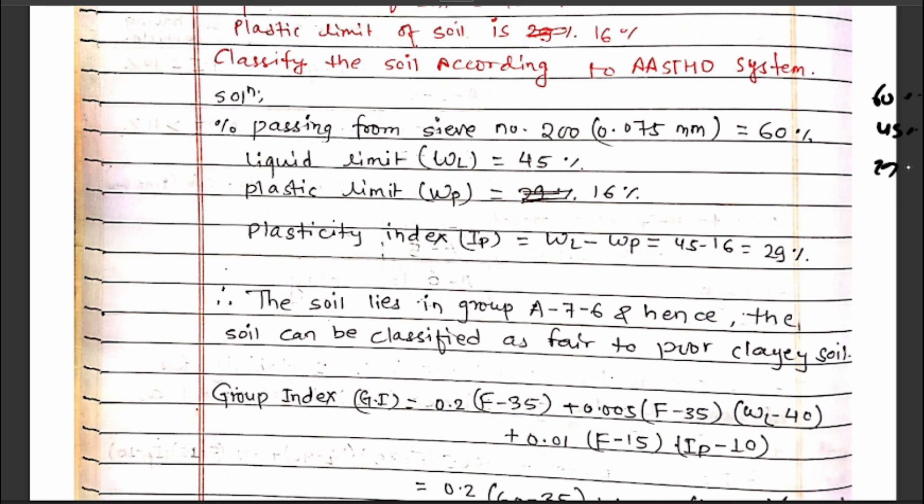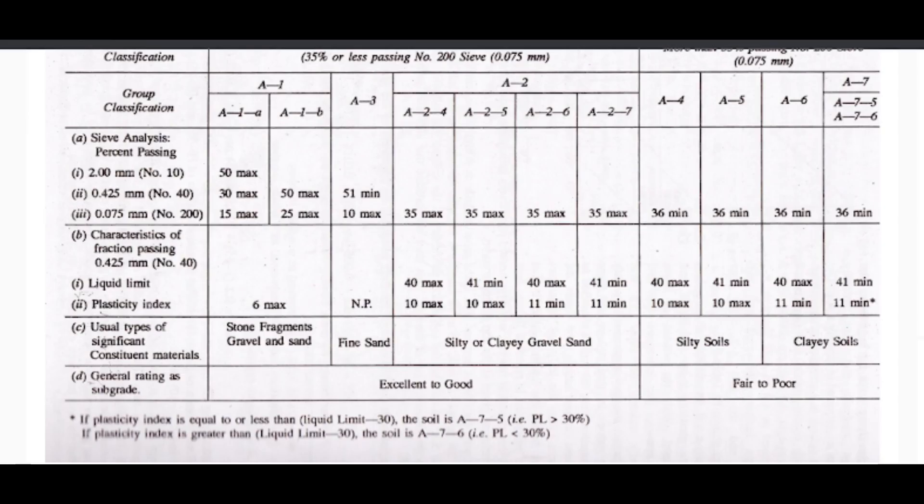Here is the particular data. The percentage passing is 65% for groups A4, A5, A6, and A7. If the percentage passing is 60%, it falls in group A1 or A3. For A2, the percentage passing is a maximum of 35%. For A3, percentage passing is maximum 35%, while for A6 it's a minimum of 36%.